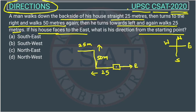So he started from here. The question is asking the direction from the starting point. He is now in which direction? This is east, this is west, and this side is north. So he is in the northwest direction. The answer would be option D. This is the answer — it was an easy question.